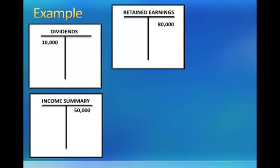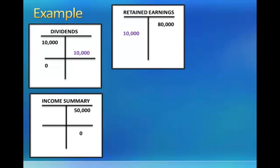The next step in the process is to close the dividend account and the income summary account to retained earnings. This dividend account represents the dividends that were declared during the period. It has a debit balance of $10,000, and the income summary account has a credit balance of $50,000 — the balance we just created in our previous two closing entries. We want our dividend account and income summary account to each have a zero balance. Retained earnings currently has an $80,000 credit balance, which is last period's ending balance. To close dividends, we need a credit of $10,000, which means we'll debit retained earnings $10,000. To close income summary, we need a debit of $50,000, which means we will credit retained earnings $50,000.